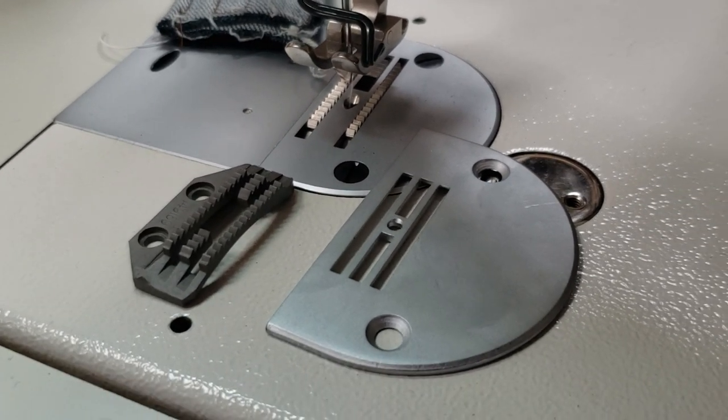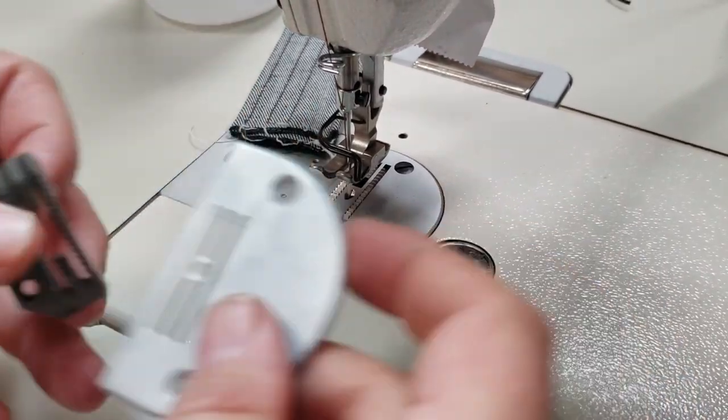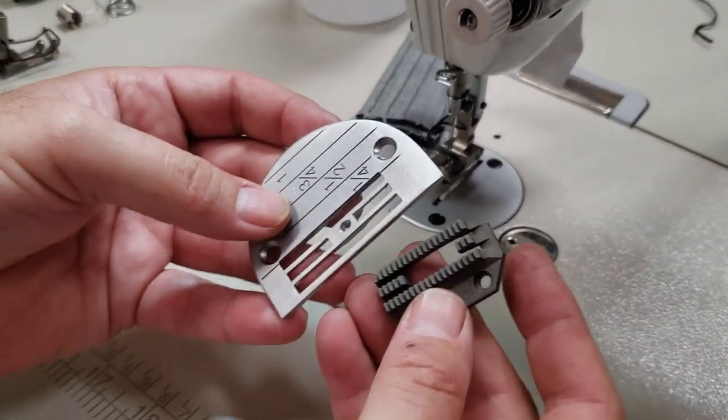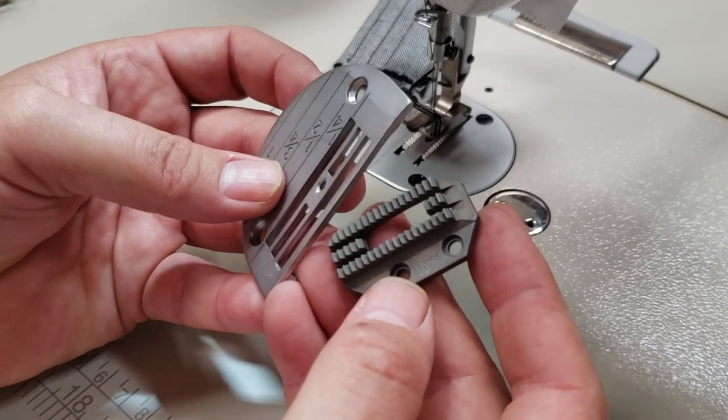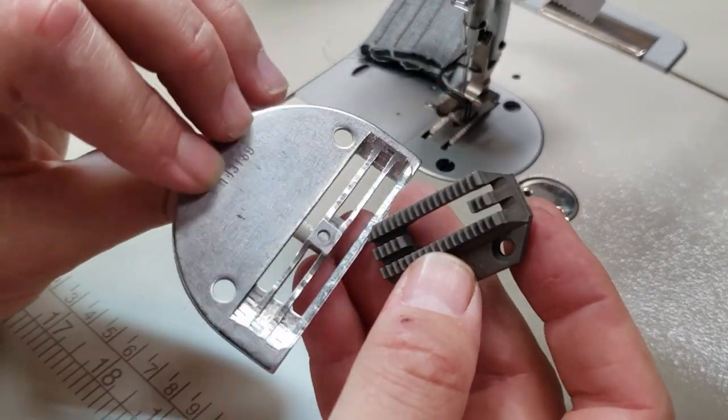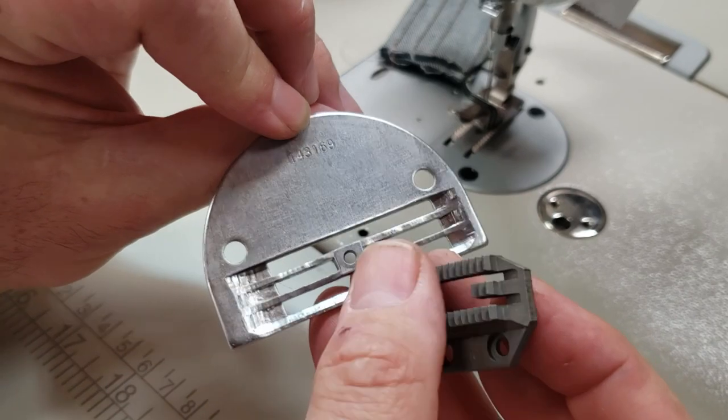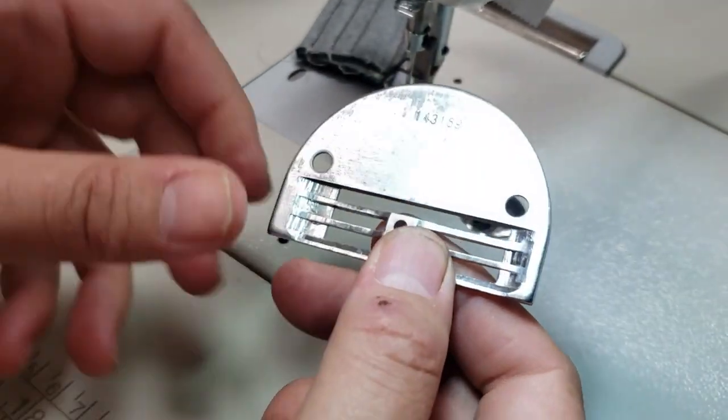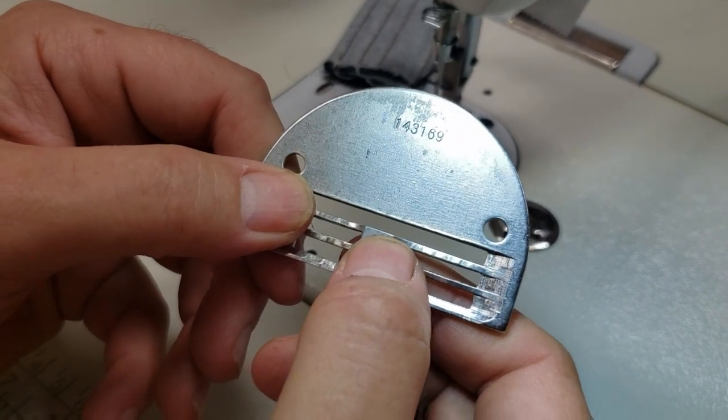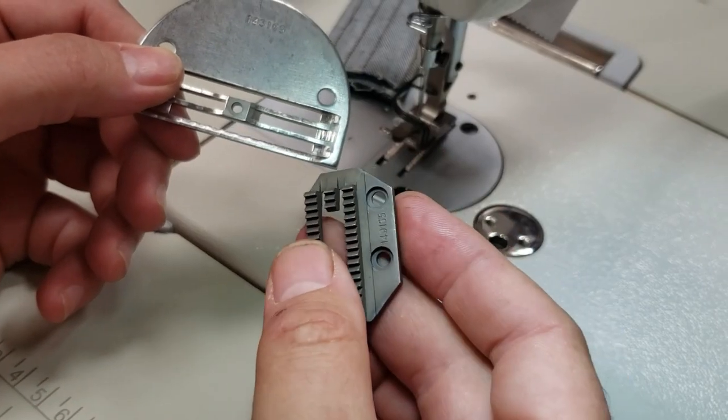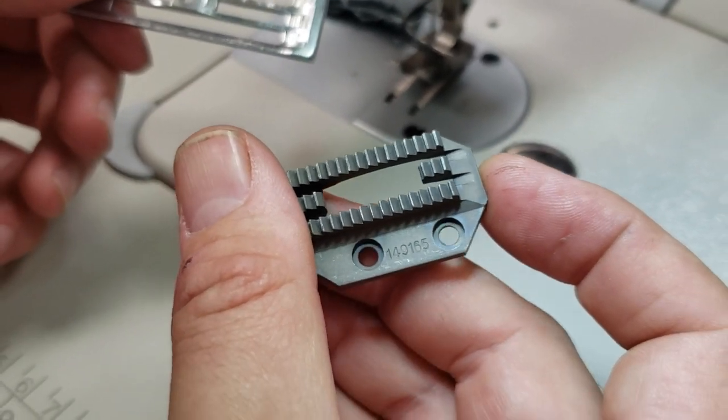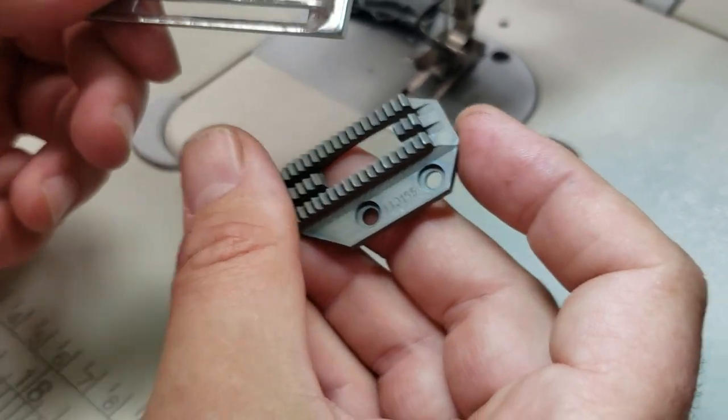If you want this to be more heavy duty, the heaviest of all, you're going to change it to 143169 on the plate and 149165 for the feed dog. These go together.